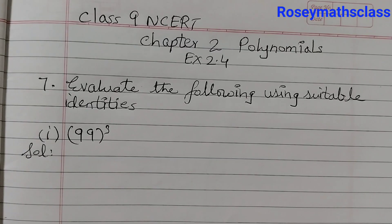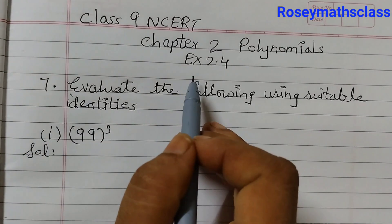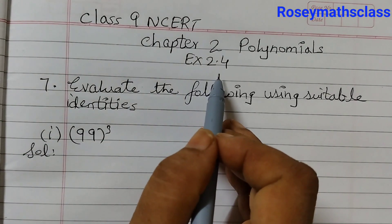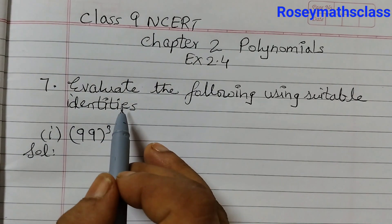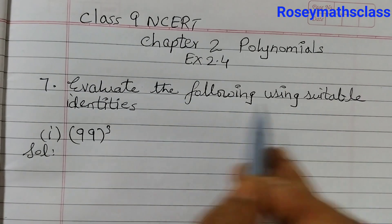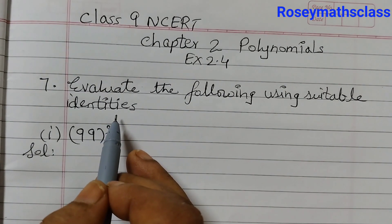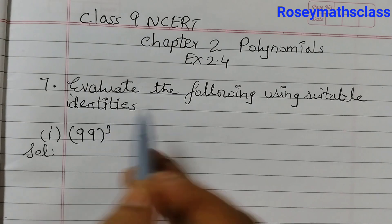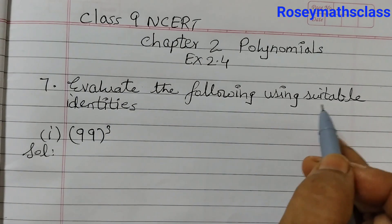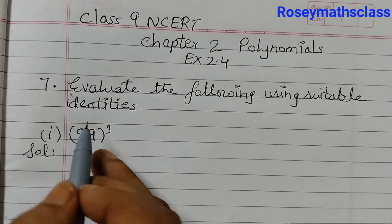Hello students, today we shall discuss question number 7 of exercise 2.4: Evaluate the following using suitable identities. This question has 3 parts and we need to find the values using suitable identities.